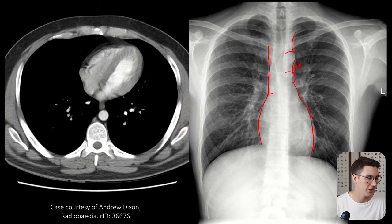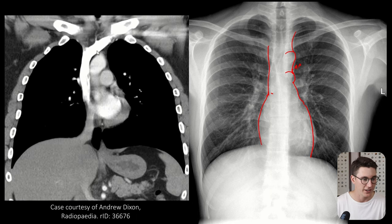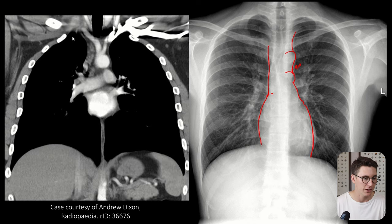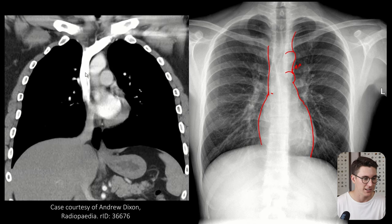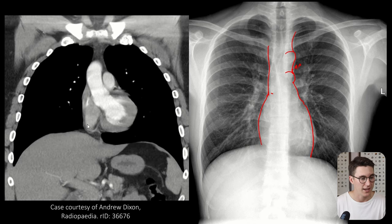Let's have a look on our coronal slices. Here is our superior vena cava getting its tributaries from the left and right brachiocephalic veins, draining down into the right atrium. There's our right atrium making that right heart border.